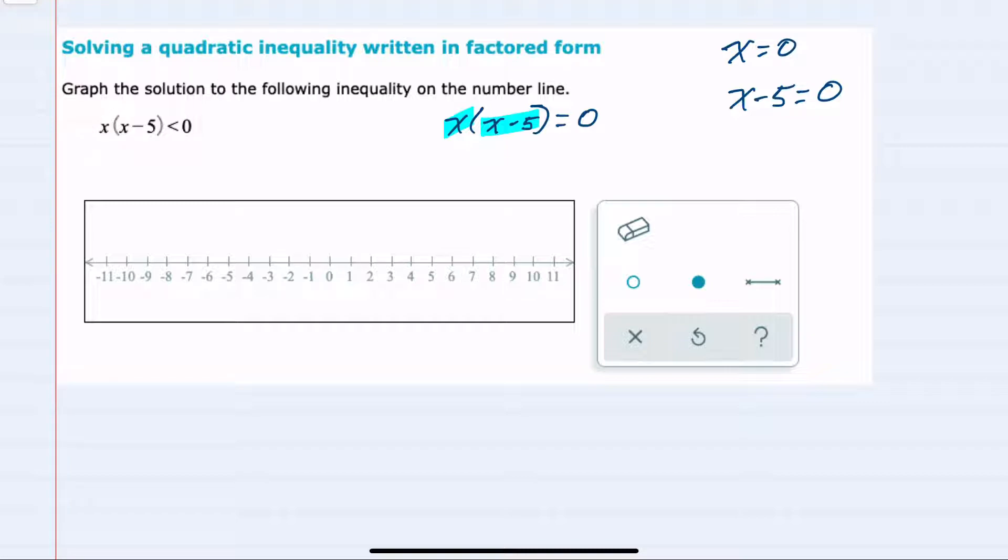either the first would have to be 0, or the second would have to be 0 in order to multiply to get 0. So I have one critical value here when x is 0. And from the second piece, if I isolate the 0 by adding the 5 over to the other side, I have another critical value when x equals 5.